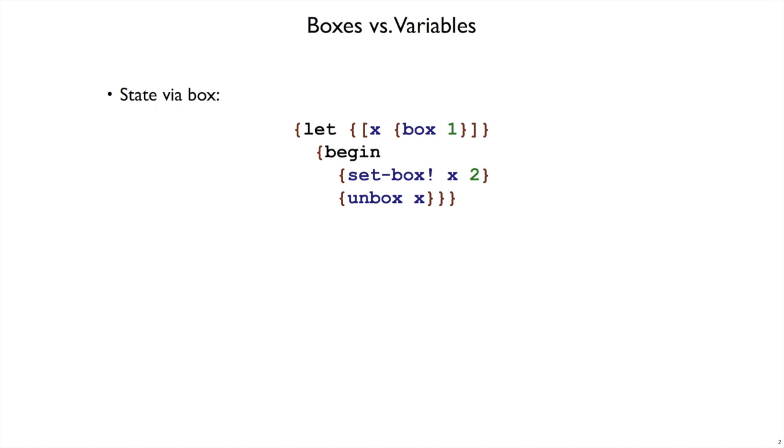We've implemented boxes in curly, and we can use boxes for state. For example, creating a box that contains one, setting that box to contain two, and that way when we get to the unbox x here, we'll get a two instead of one.